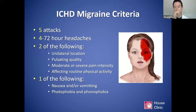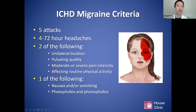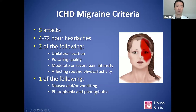The headaches last four to 72 hours. You have to have two of the following: a headache with unilateral location, pulsating quality, moderate or severe pain intensity, or affecting routine physical activity. And then one of the following: nausea and/or vomiting, or photophobia and phonophobia.